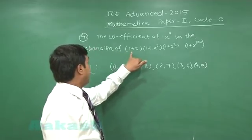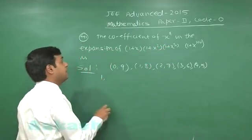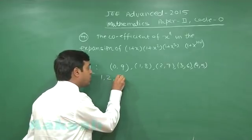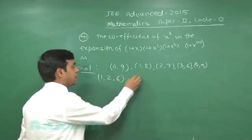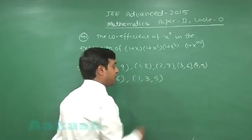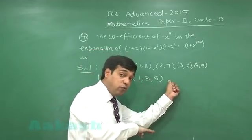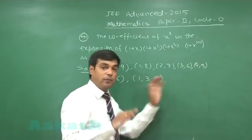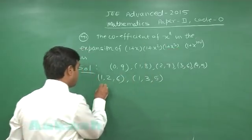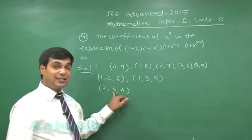Next, when we look at products of three terms: x·x²·x^6, then x·x³·x^5. Moving to (1+x^4), we have x^4. Then we have x²·x³·x^4.